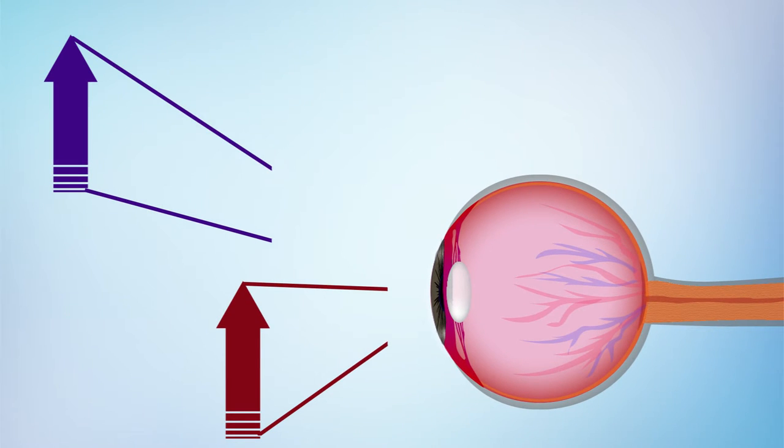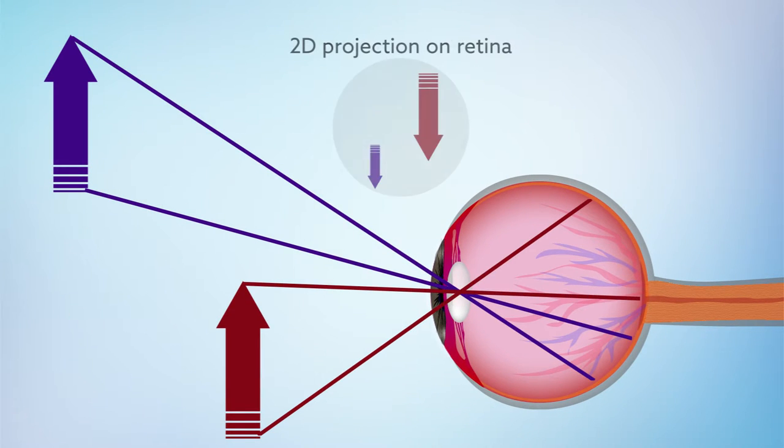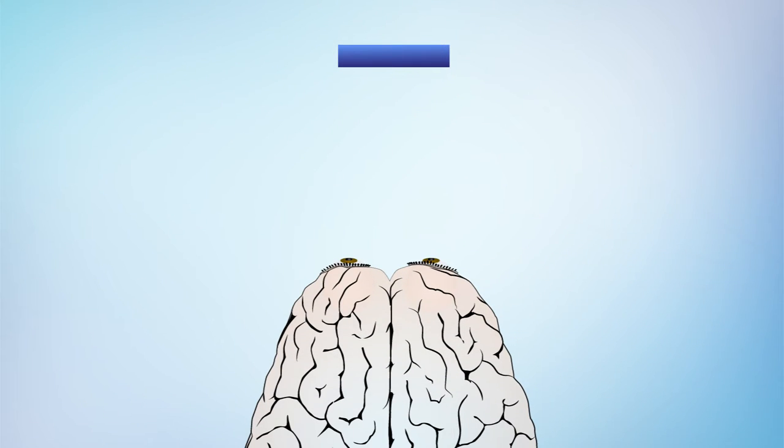How do we see in 3D when we start with a 2D projection onto our retinas? The most basic answer has to do with the fact that we have two eyes. Differences in position create a binocular disparity our brains can exploit to create stereo vision.